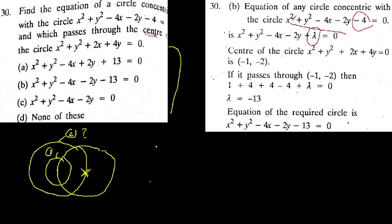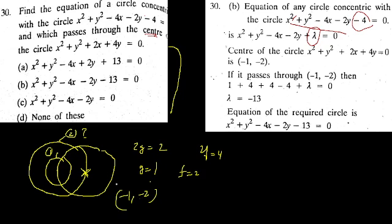From x squared plus y squared plus 2x plus 4y equal to 0: 2G equals 2, so G is equal to 1; 2F is equal to 4, so F is equal to 2. Therefore the center is minus G, minus F, which gives center as minus 1, minus 2.